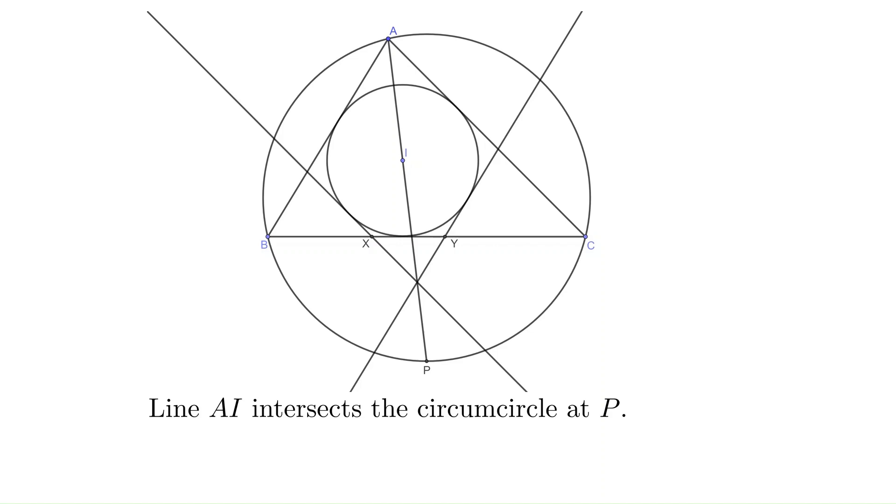You may notice that the line AI seems to pass through the intersection of the two parallel lines. In other words, the three lines are collinear.